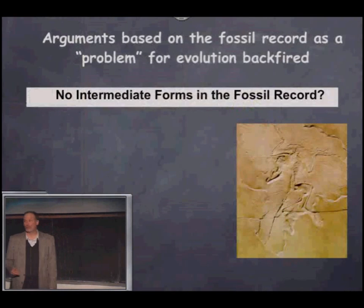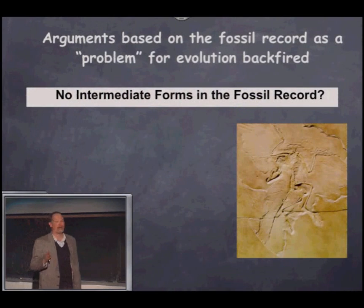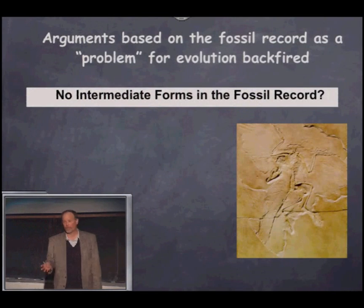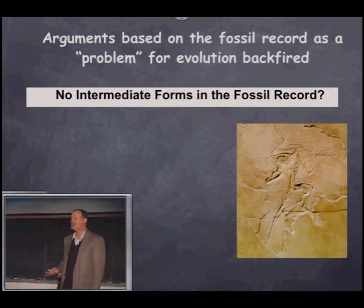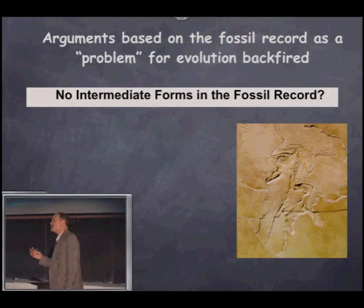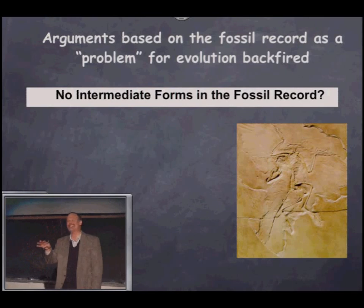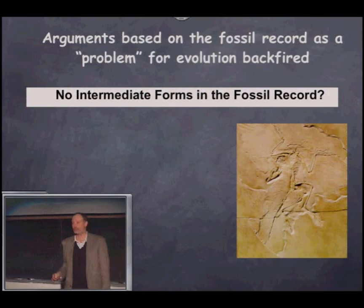The irony is that the favorite example of intelligent design — the bacterial flagellum — actually matches the predictions made by evolutionary theory, which is that the parts of this system should have functions of their own. The core argument for intelligent design from biochemical complexity collapses once you look at the scientific literature. The Dover trial, like many arguments about evolution, also involved fossils.